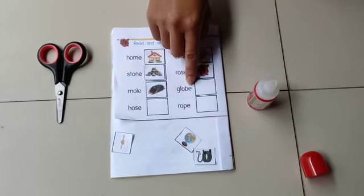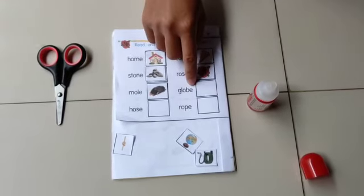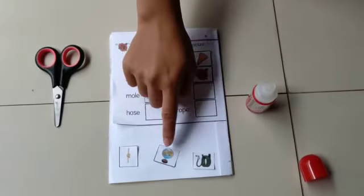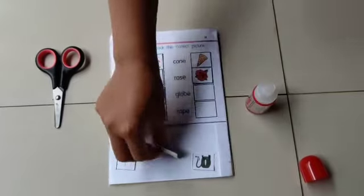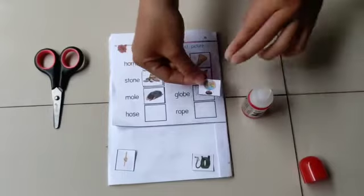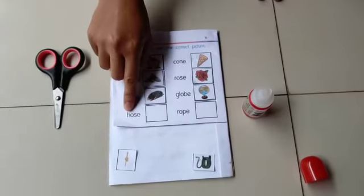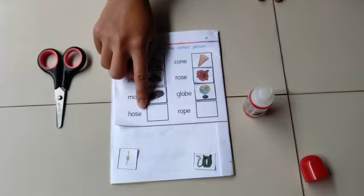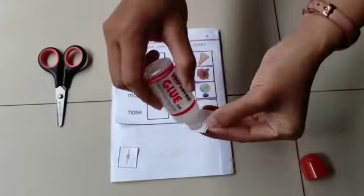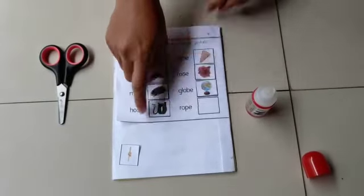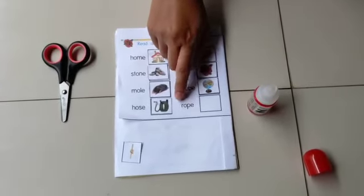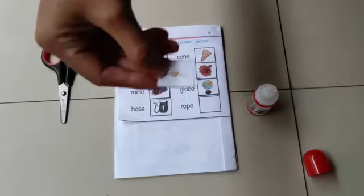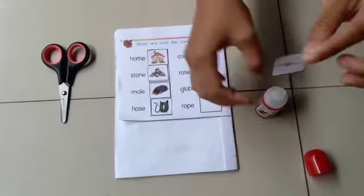After all we have globe. Where is the globe? Is that a globe? No. Is it? Yes. Now stick it. And then we have hose. Let's stick your hose everyone. And the last one is rope. After you taking all of the pictures, let the book open so that the glue will be dry.